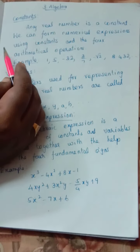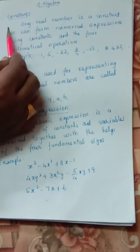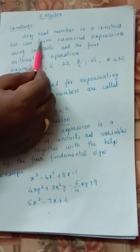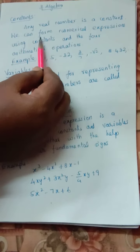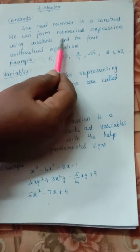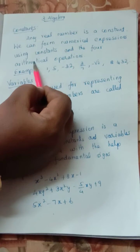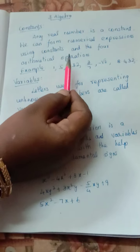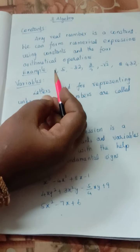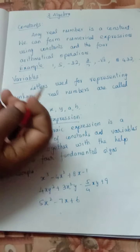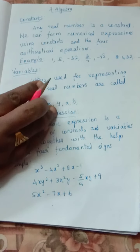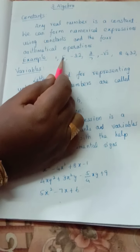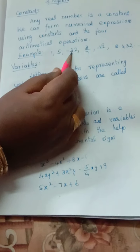So now we are going to study about constants — first, constants. Any real number is a constant. We can form numerical expressions using constants and the four arithmetical operations. Constant means no change — no change in that value. For example: 1, 5, minus 32.